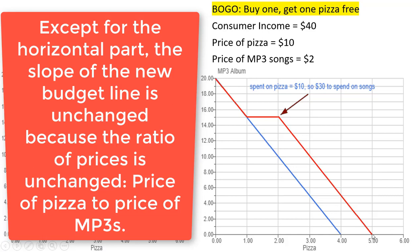We can also look at this bottom point. If we spent all our money on pizza — we have $40 — we could buy four pizzas. And since buy one get one free was involved on the first pizza, we would then have a total of five pizzas.